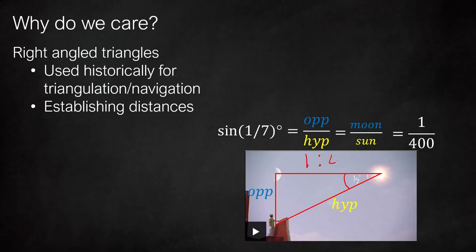So the sun is 400 times further away than the moon is, and this was measured back in the third century just using trig.